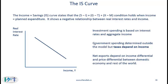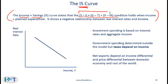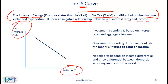As long as you do the questions at the back of your reading and from past papers, that should be good enough. IS means income equals saving. The IS curve states that savings minus investment must equal G minus T (the government deficit) plus X minus M (net exports). This condition holds when income is equal to planned expenditure. The IS curve shows a negative relationship between real interest rates and income — we plot real interest rates on the Y axis and income on the X axis.